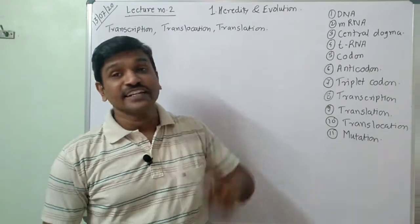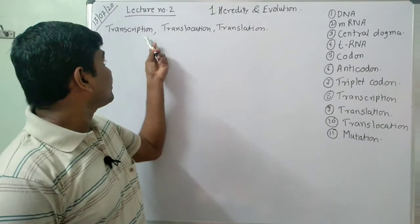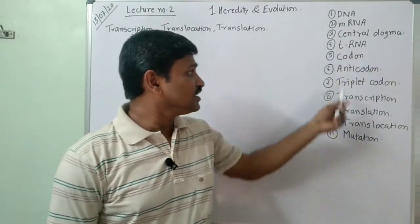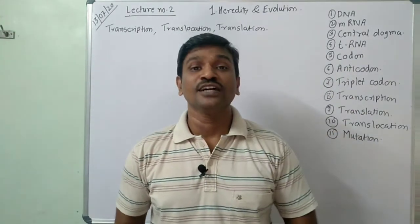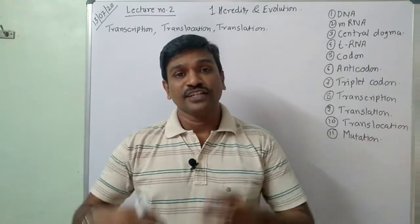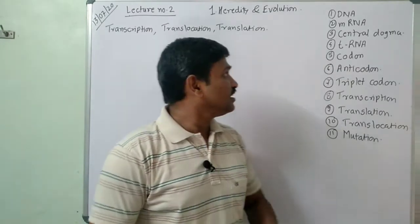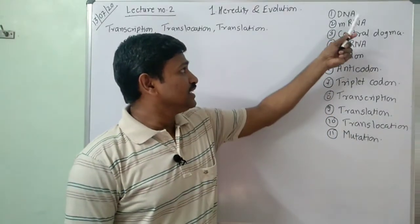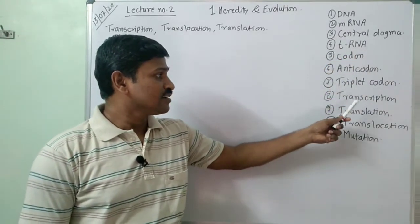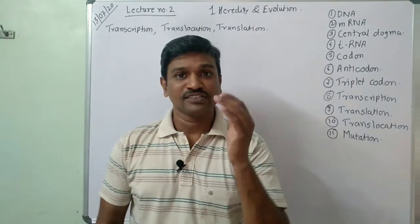Today we are in the second lecture of heredity and evolution. The learning objectives are: you will become aware about transcription, translocation, and translation. Along with that, you will understand 11 terms — DNA, mRNA, central dogma, tRNA, codon, anticodon, triplet codon, transcription, translation, translocation, and mutation.